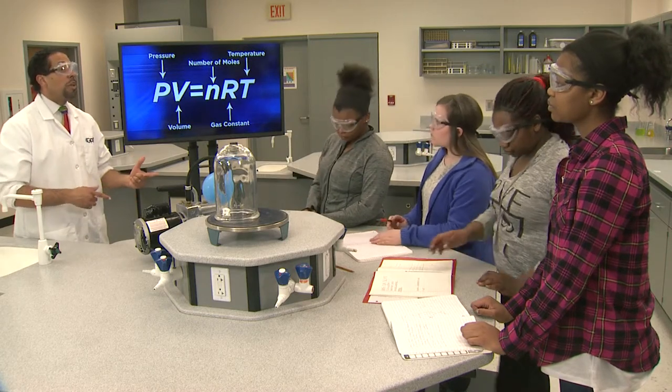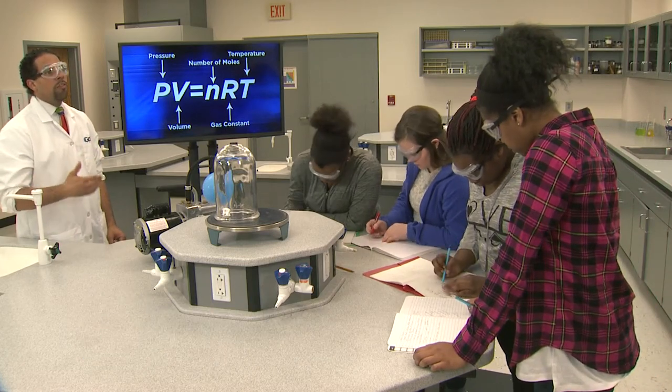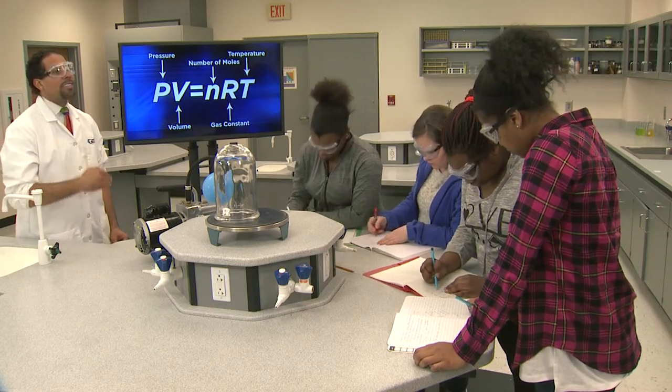Now that we've verified the relationship between pressure and volume, let's see if each team can draw a model that explains what we just saw at a molecular level. Take a few minutes to develop your model, and then each team will explain their model to the rest of us. Make sure you understand why the gases are behaving the way you think they will. When you're done, rejoin us at the top of the next video on the Unit 9 playlist.